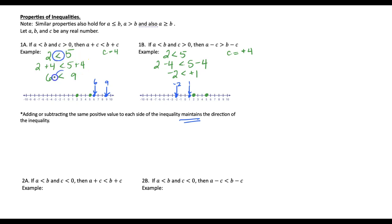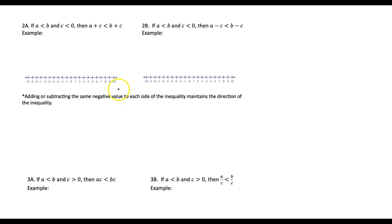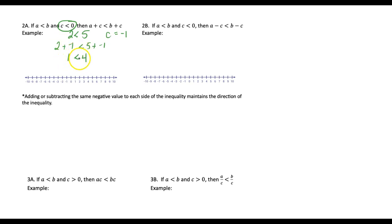If we started with a less than, we ended with a less than. Looking at property 2, keeping 2 is less than 5 and now picking c as negative 1: 2 plus negative 1 and 5 plus negative 1 gives us 1 and 4, and that inequality is maintained. It stays a less than. The 2 was on the left compared to 5, and then looking at 1 and 4, the 1 stayed on the left.